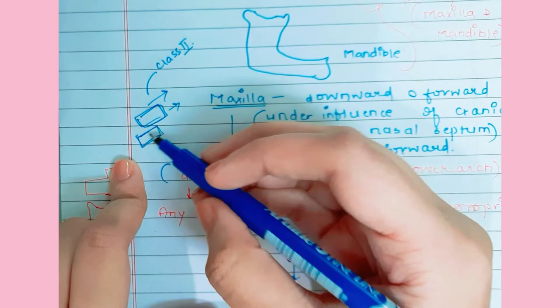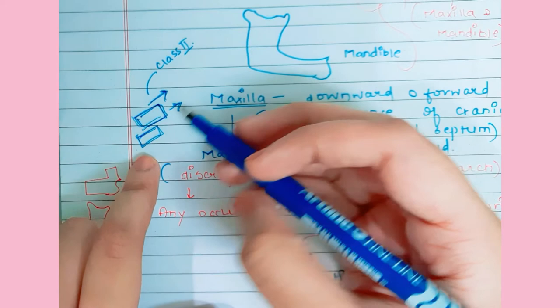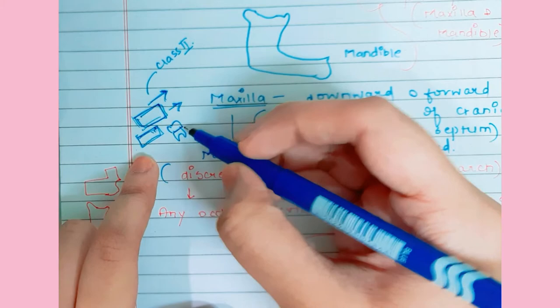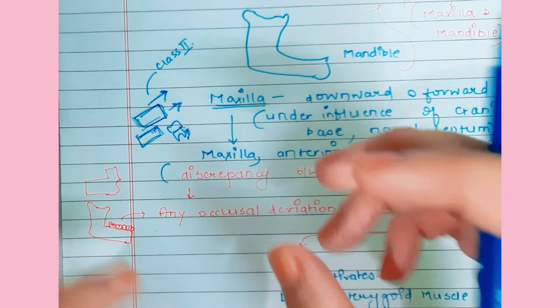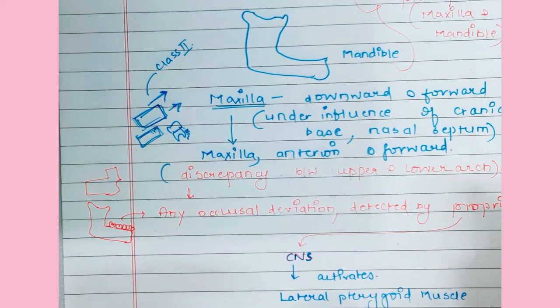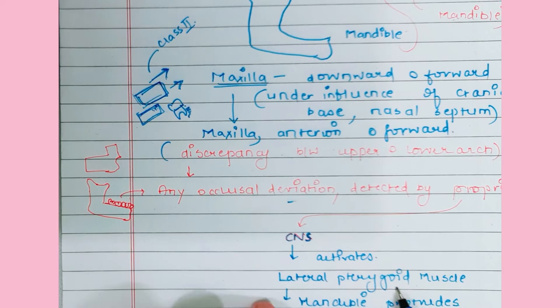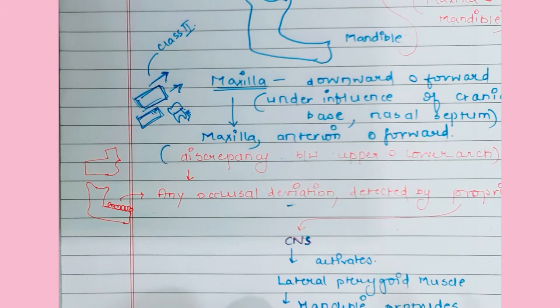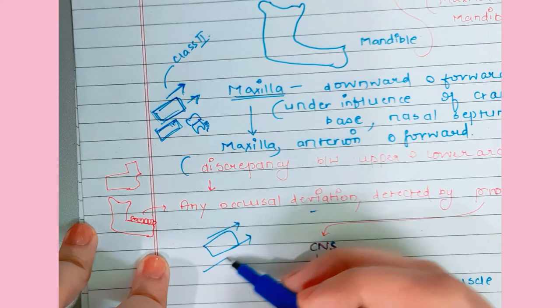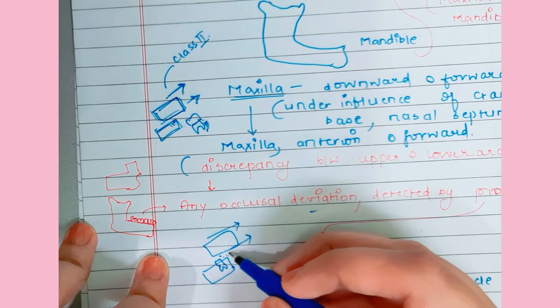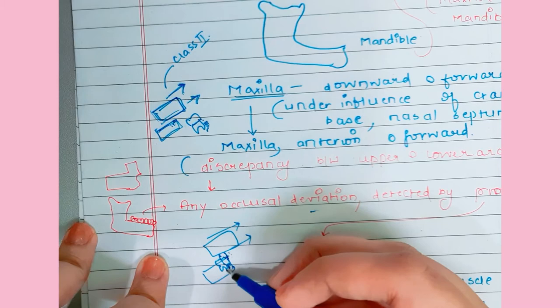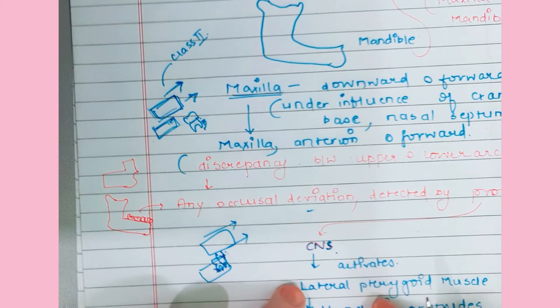If the maxilla grows excessively anteriorly and the mandible is retarded, this discrepancy is detected by the teeth through proprioception — the proprioceptors act like a mini-brain, detecting any movement or changes. They send signals to the CNS. Any occlusal deviation or prematurity is detected by this proprioception, signals are sent to the CNS, and then the lateral pterygoid muscle is activated to bring about protrusion of the mandible.